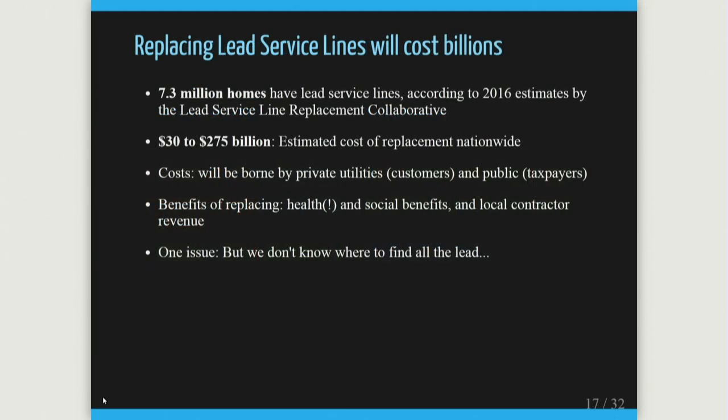It's believed that seven and a half million homes have lead service lines in the U.S., and it's going to cost possibly as much as a quarter of a trillion dollars to do that infrastructure replacement. This is a big problem, and it's going to be borne by taxpayers, utilities, and homeowners potentially as well. There are major health and social consequences of these decisions.